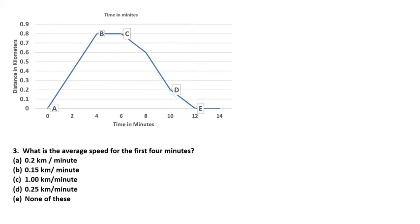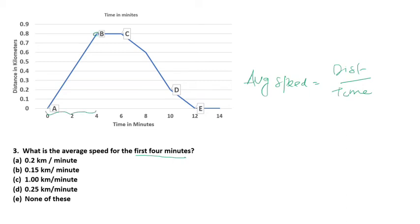Next question: what is the average speed for the first four minutes? Average speed equals total distance divided by total time taken. For the first four minutes, the distance traveled is 0.8 km and the time taken is 4 minutes. So 0.8 divided by 4 gives 0.2 kilometer per minute. Option A is the correct answer.